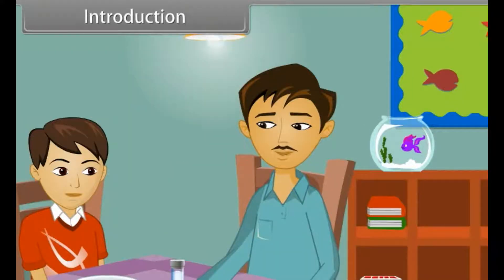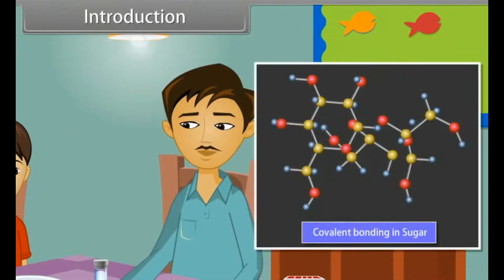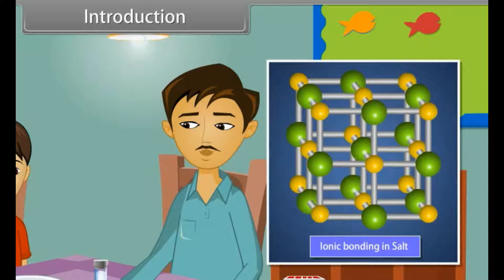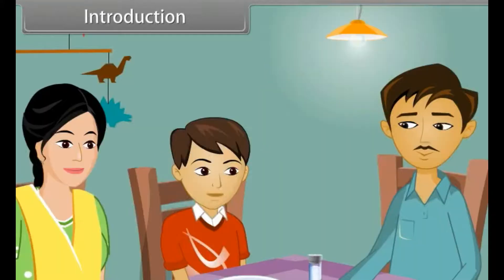Son, your answer is right but not appropriate. I will tell you: every structure depends upon the nature of chemical bonding between them. In sugar, there is covalent bonding in the molecules, whereas in salt, there is ionic bonding in the molecules. Okay, Father. I got the reason and I want to know some more about that.